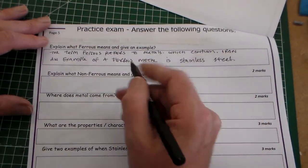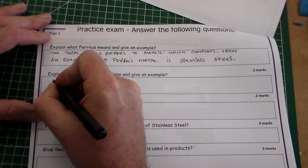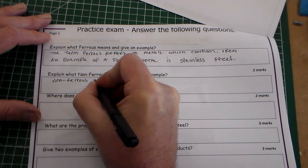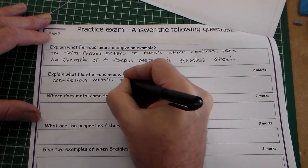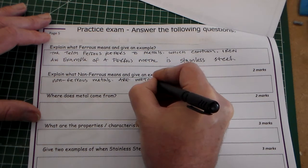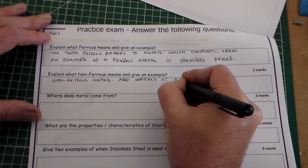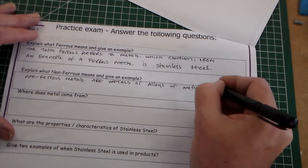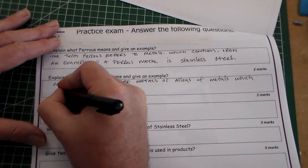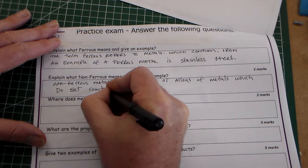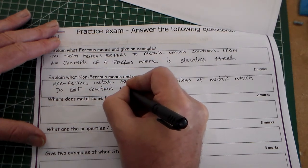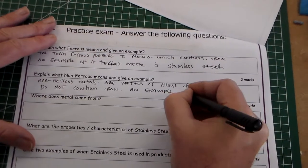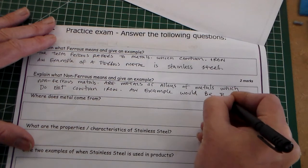Explain what non-ferrous means. Well, obviously if ferrous contains iron, non-ferrous metals are metals, but we mustn't forget, or alloys of metals, which do not contain iron. An example would be brass.